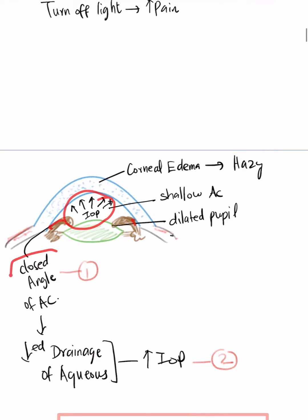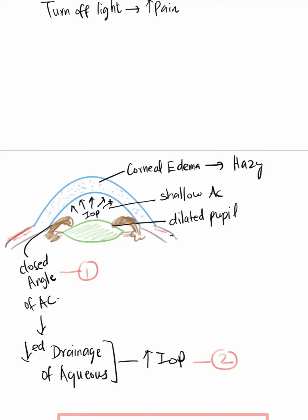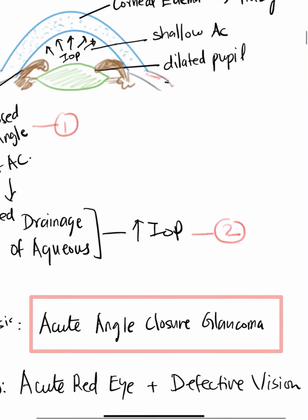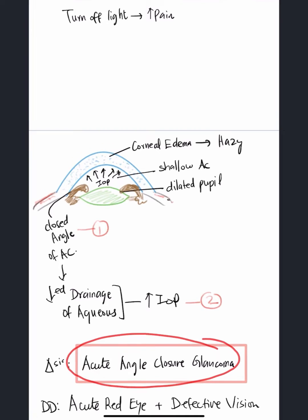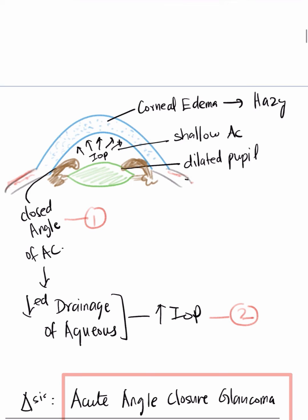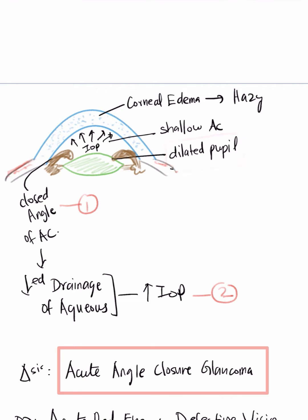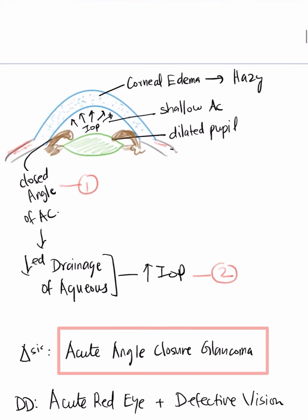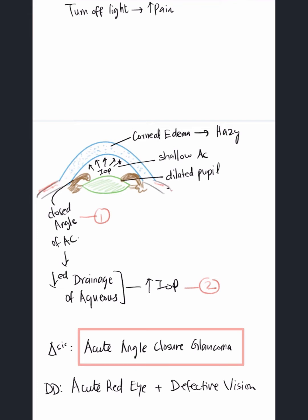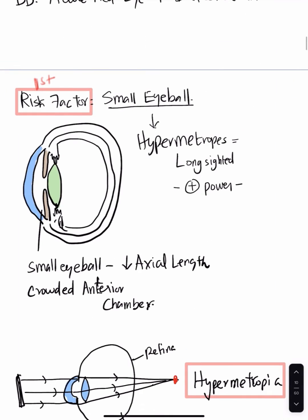Closure of the angle impairs aqueous drainage, leading to raised intraocular pressure. The diagnosis is acute angle closure glaucoma — not open angle glaucoma. An important feature to note is the mid-dilated pupil. The differentials for acute red eye with defective vision include acute angle closure glaucoma, acute keratitis, acute anterior uveitis, and acute endophthalmitis.